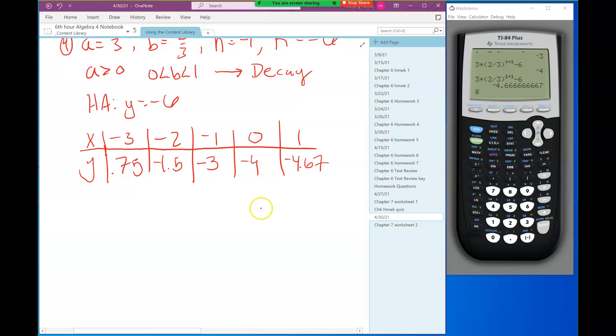Then I change that to negative 1, that's negative 3. Change that to 0, that's negative 4. Change that to 1, that's negative 4.67.